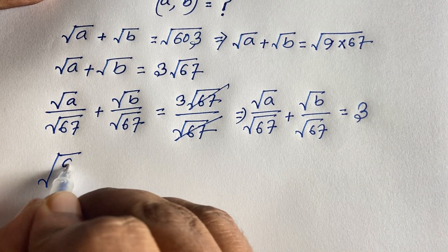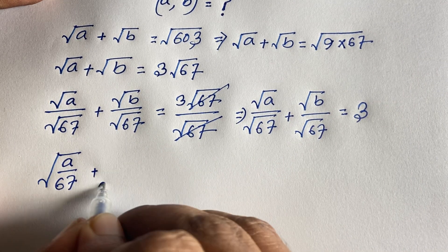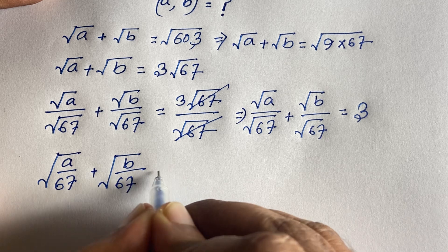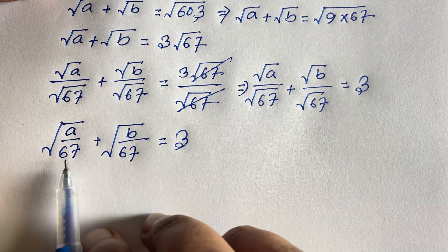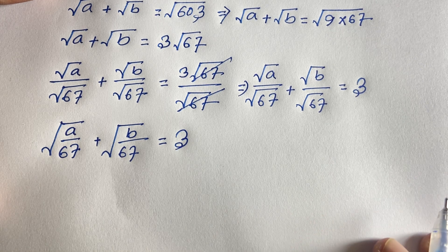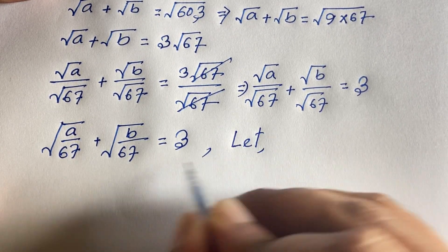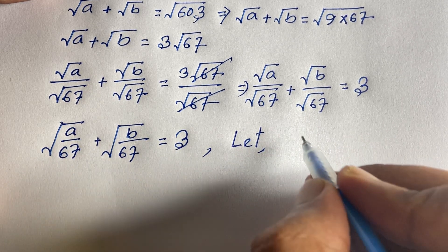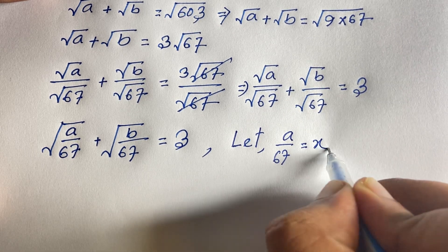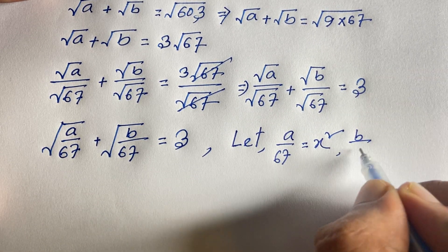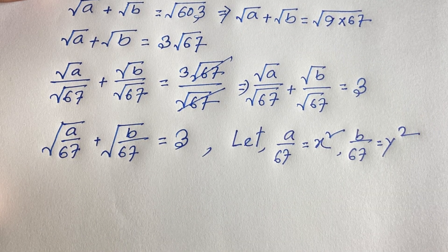This equation becomes √(a/67) + √(b/67) = 3. Now let a/67 = x² and b/67 = y², where x and y are non-negative values.